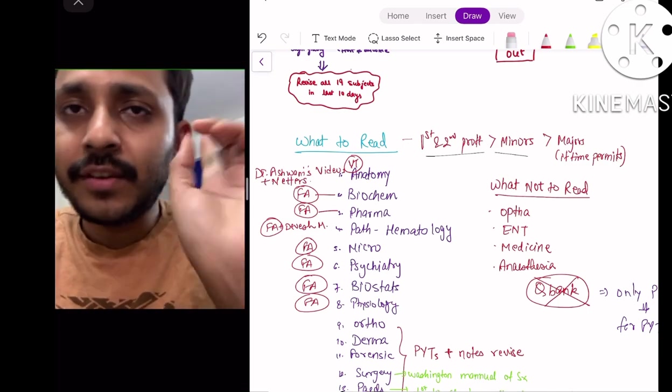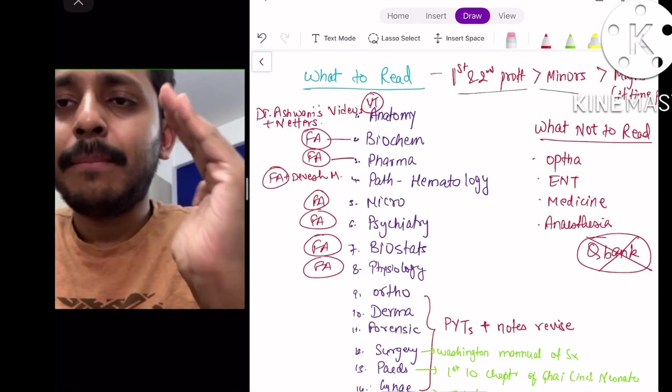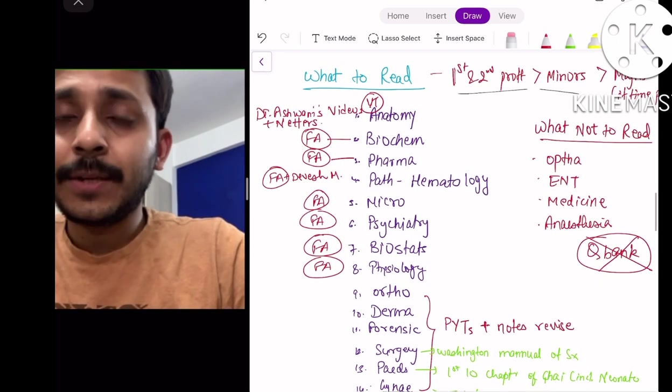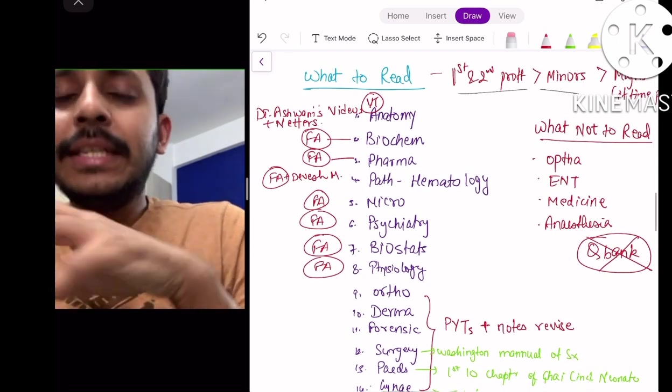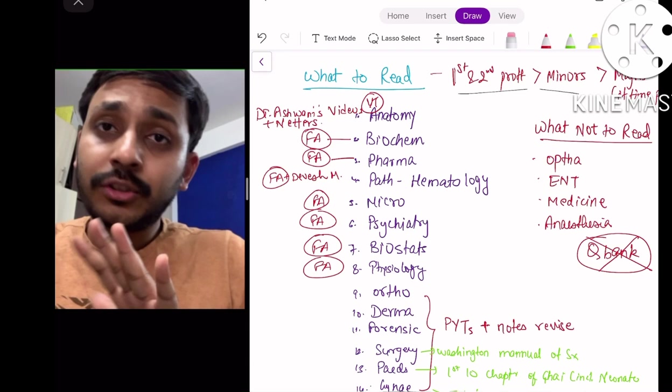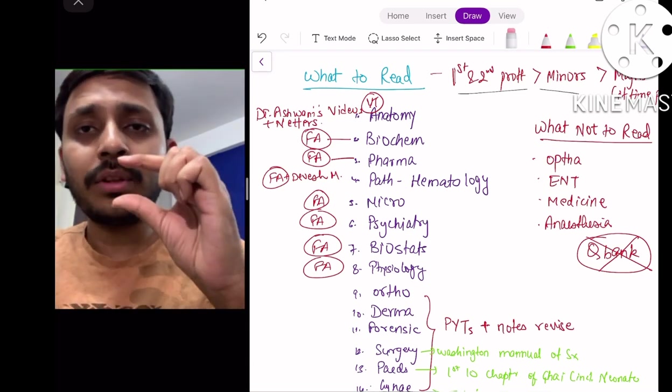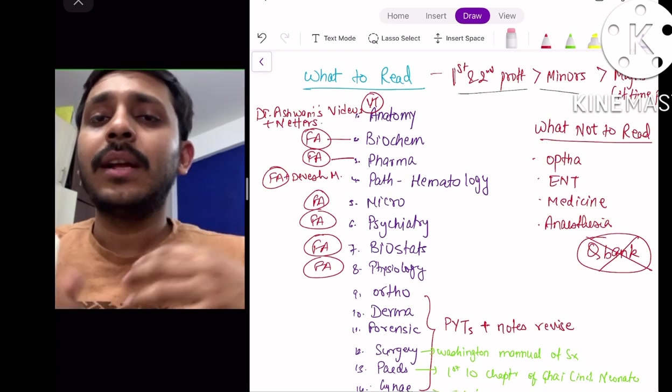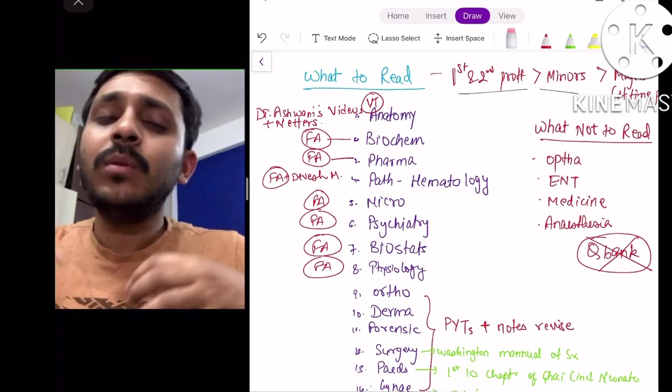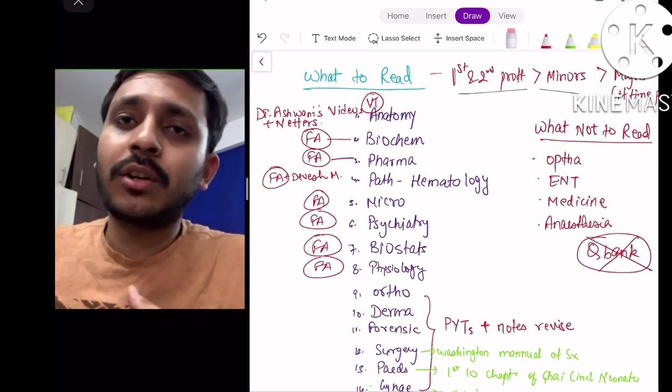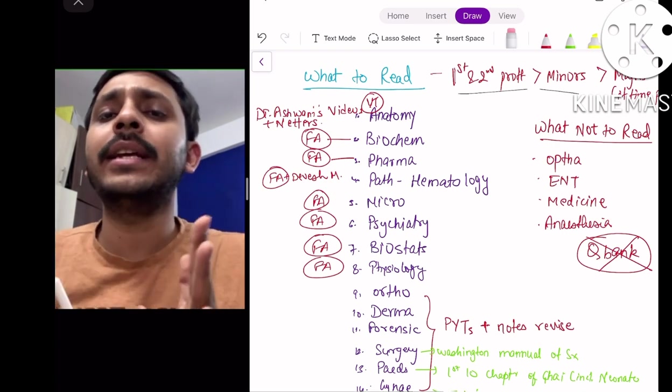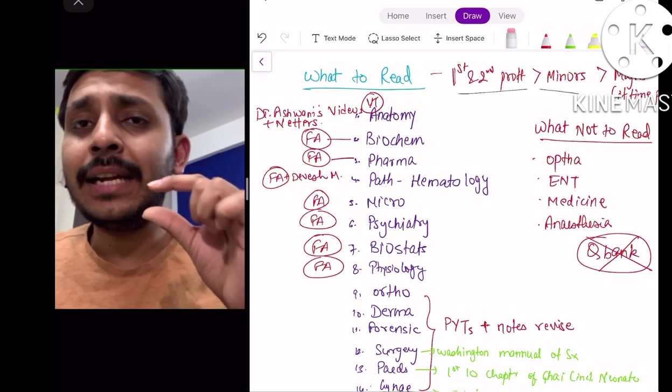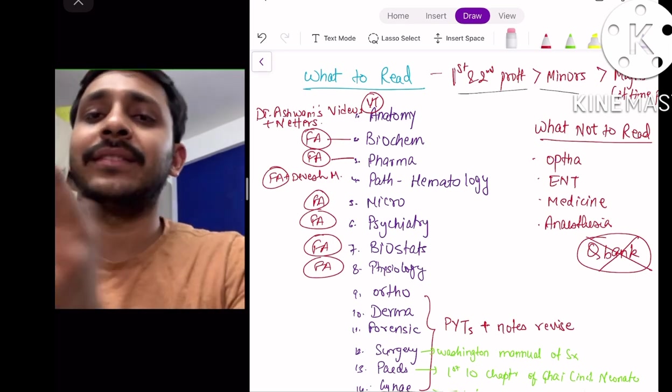We'll start with 1st and 2nd year: anatomy, biochemistry, pharma, path, micro, psychiatry and biostat as well as physiology. In my opinion, for these subjects, First Aid is a very very good source. It is very high yielding. It is just one book that you have to read, and you can condense your previous question knowledge into each subheading of First Aid. For example, biochemistry in First Aid is around 40-45 pages. The whole biochemistry will be covered in these high yielding 45 pages which you will be able to revise in the last 10 days.